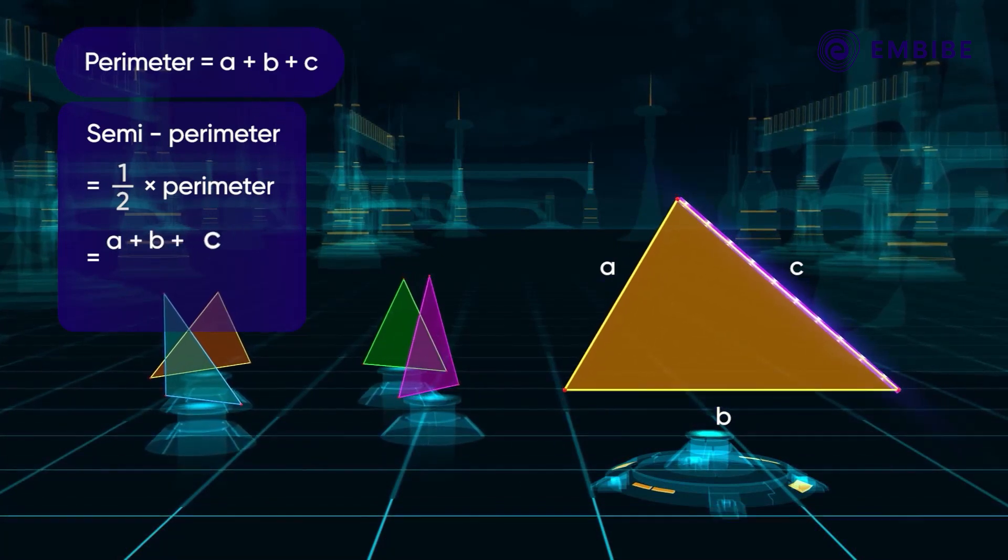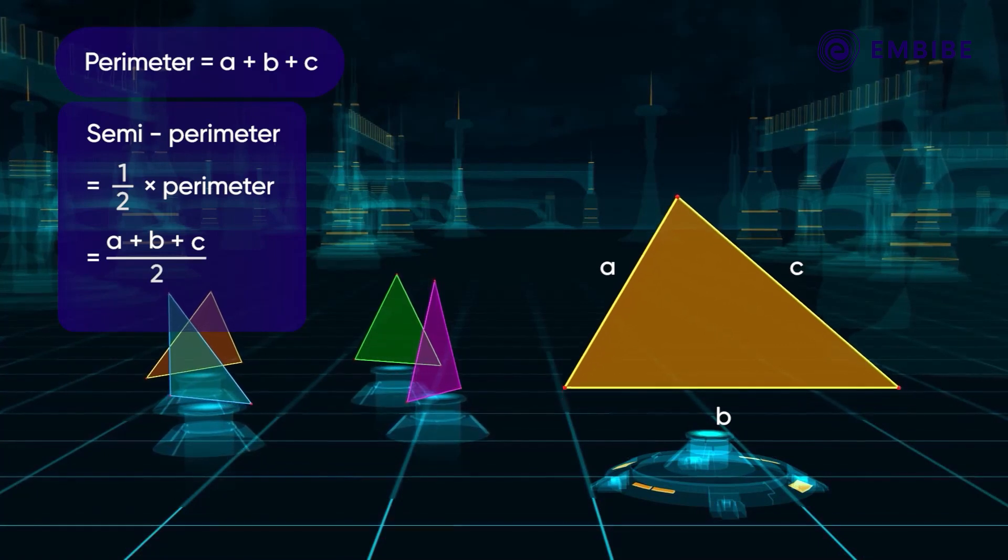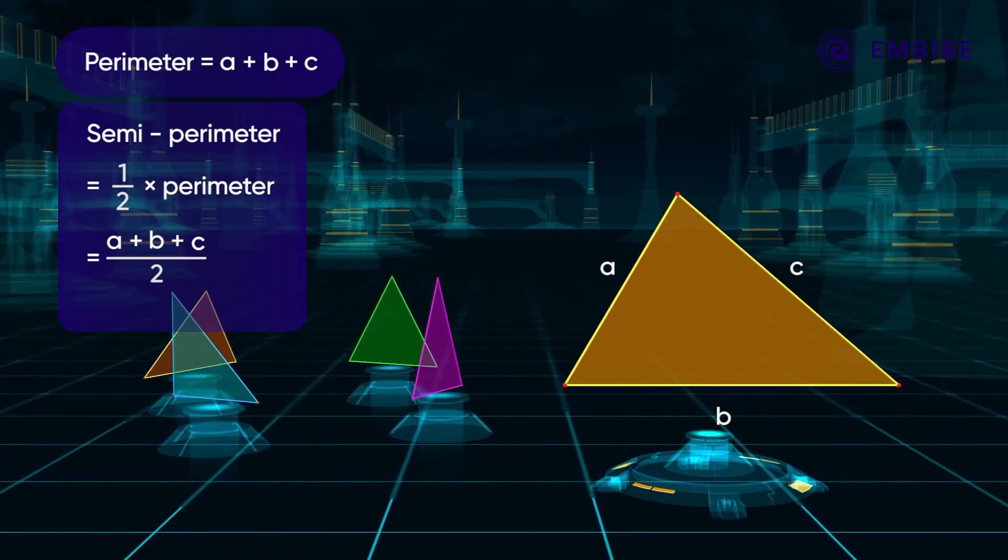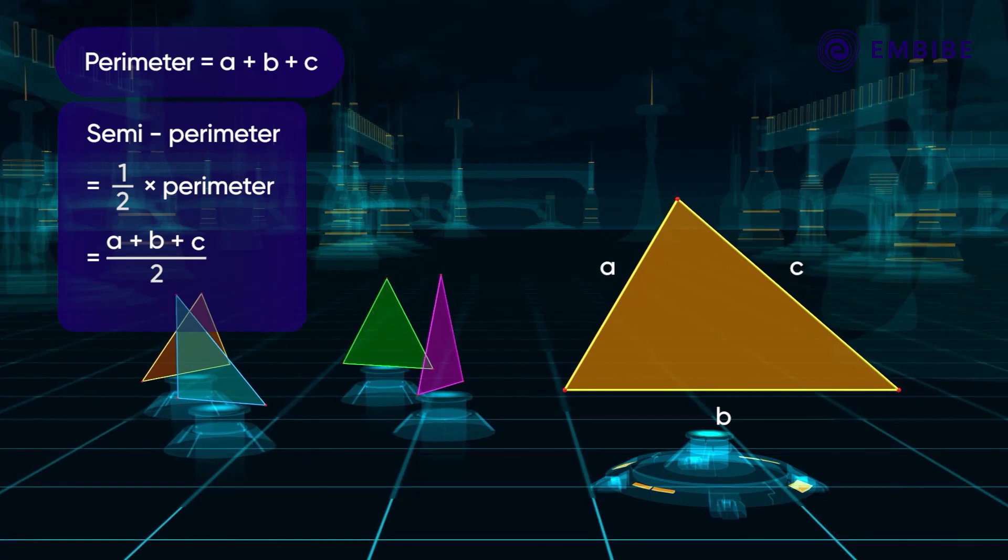Therefore, the semi-perimeter of the triangle with its sides A, B, and C is equal to A plus B plus C whole divided by 2. After understanding these facts, now we are in a good position to learn Heron's formula.